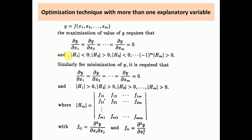The second order or sufficient condition for a maximization problem is: Hessian determinant H1 must be negative, Hessian determinant H2 must be positive, Hessian determinant H3 must be negative, and it continues alternatively up to Hm — the signs alternate between negative and positive.